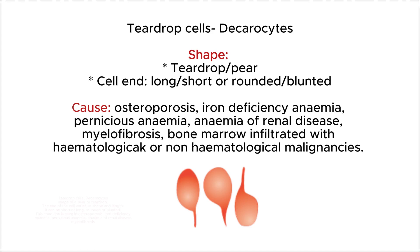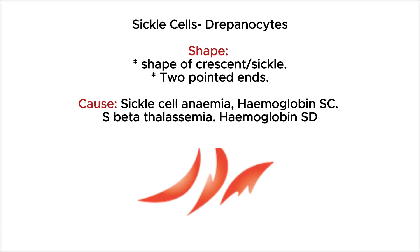Teardrop cells, or dacrocytes, have the shape of a pear or teardrop. The end of the cell varies in shape and length — it can be short or long, rounded or blunted. This condition is seen in iron deficiency anemia, pernicious anemia, anemia of renal disease, myelofibrosis, and bone marrow infiltrated with hematological or non-hematological malignancies.